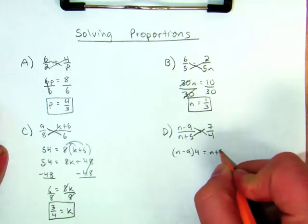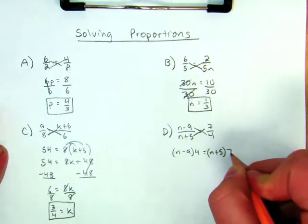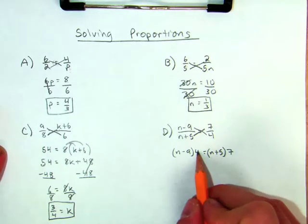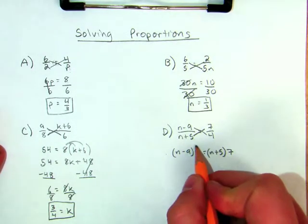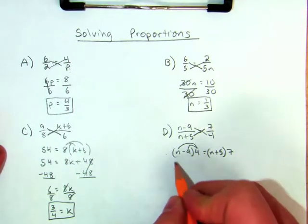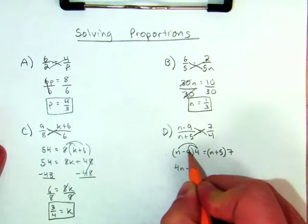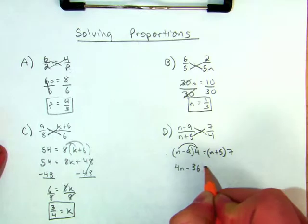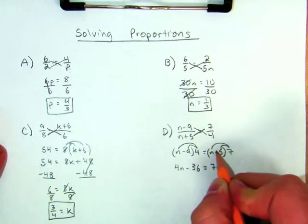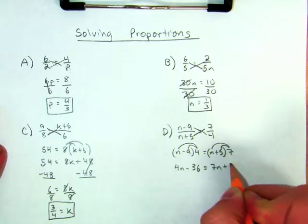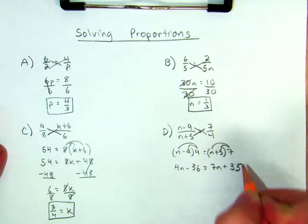The quantity N plus 5 times 7. Whether the coefficient is after or before the parentheses, nothing changes. I still distribute. So 4 times N minus 4 times 9 is 4N minus 36, equals 7 times N plus 7 times 5, which is 7N plus 35.